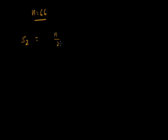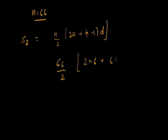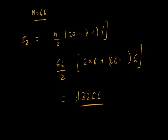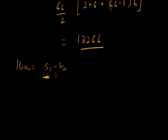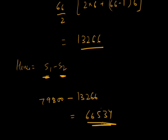The sum of all natural numbers less than 400 that are divisible by 6 is 13,266. The required answer — sum of natural numbers less than 400 that are NOT divisible by 6 — is S1 − S2 = 79,800 − 13,266 = 66,534. This is a problem of arithmetic progression.